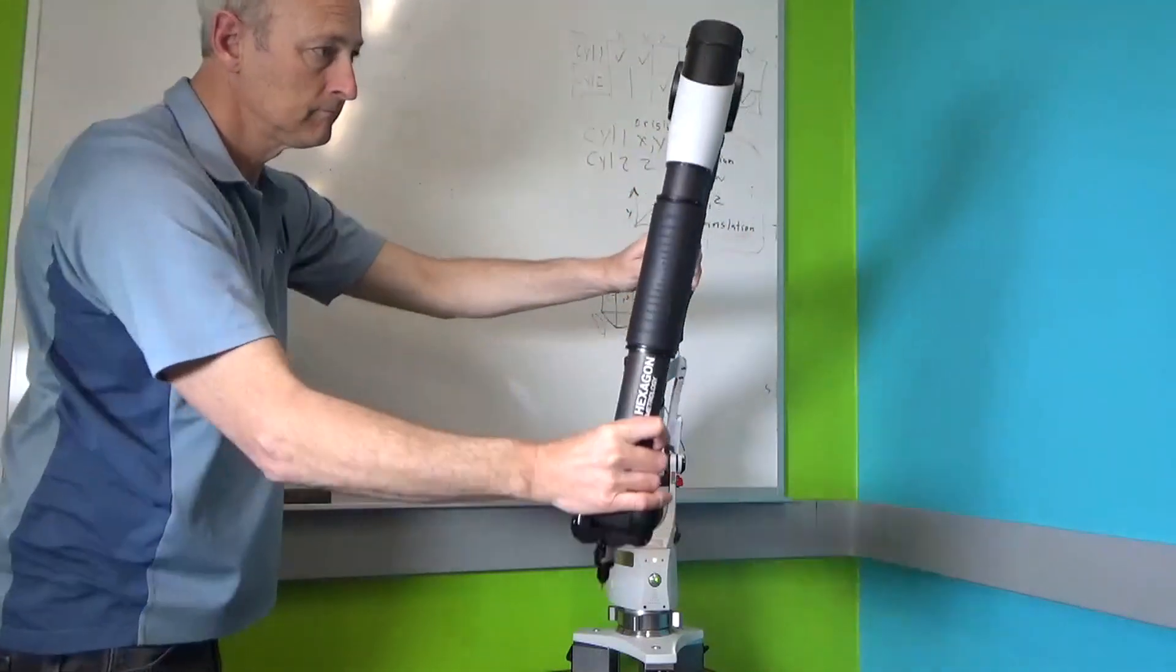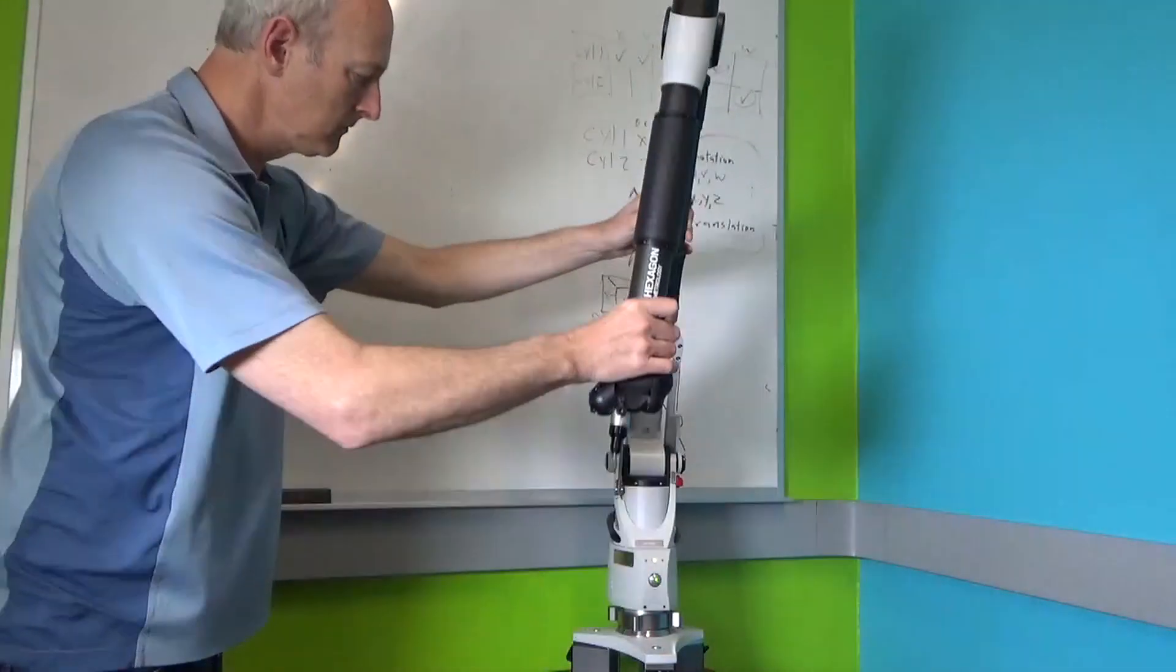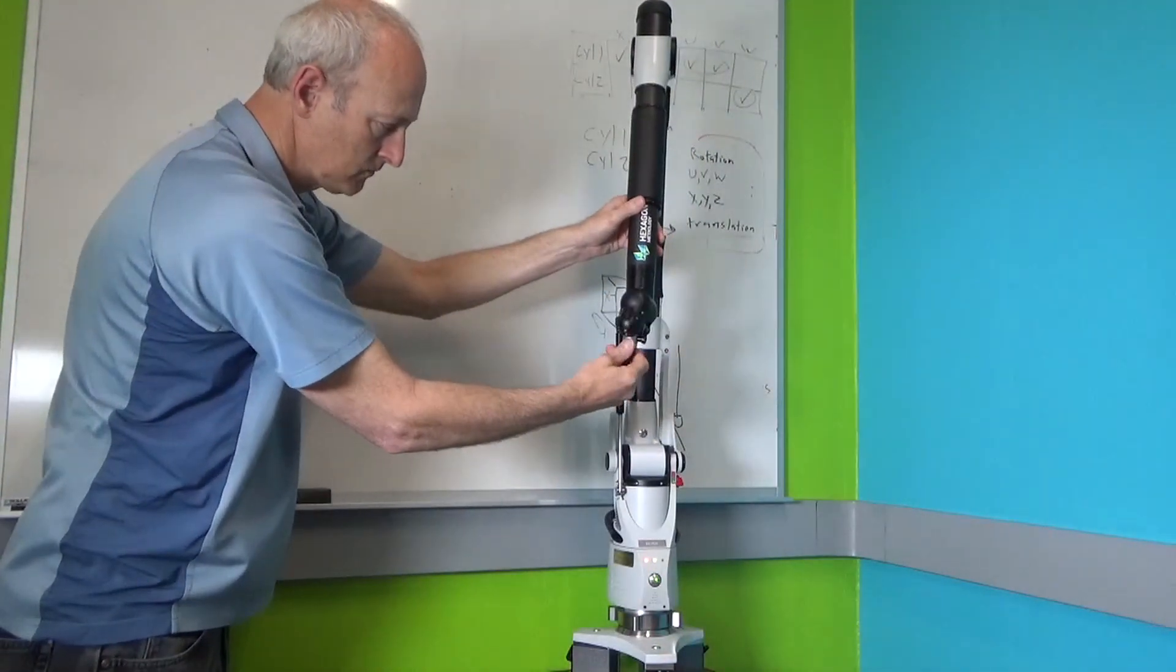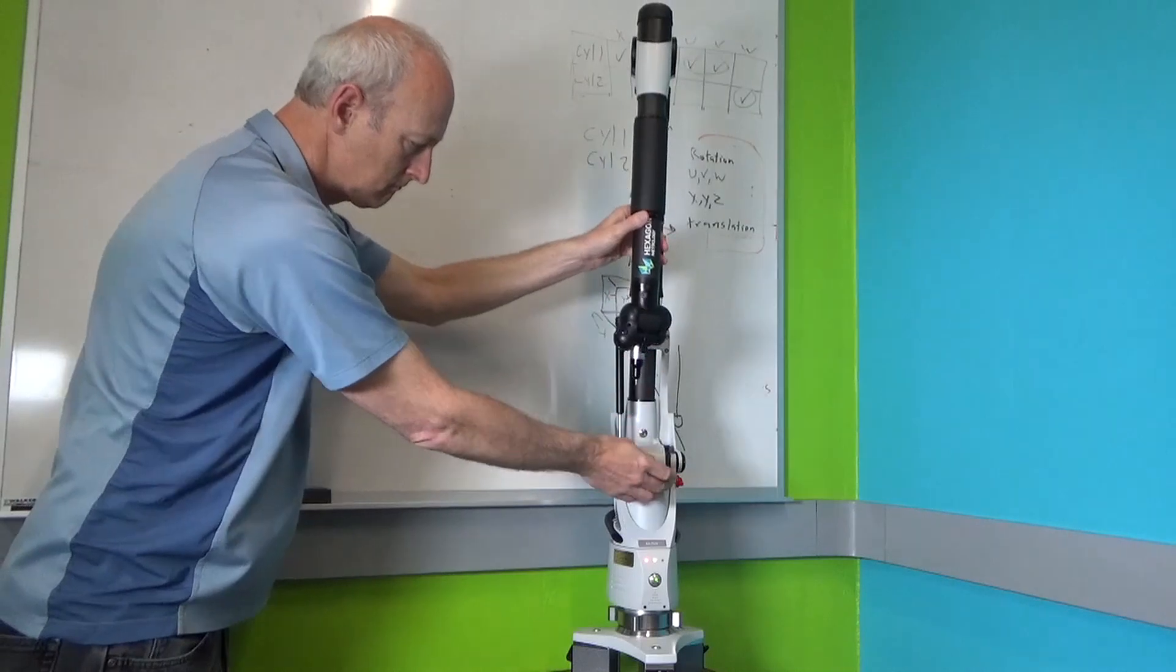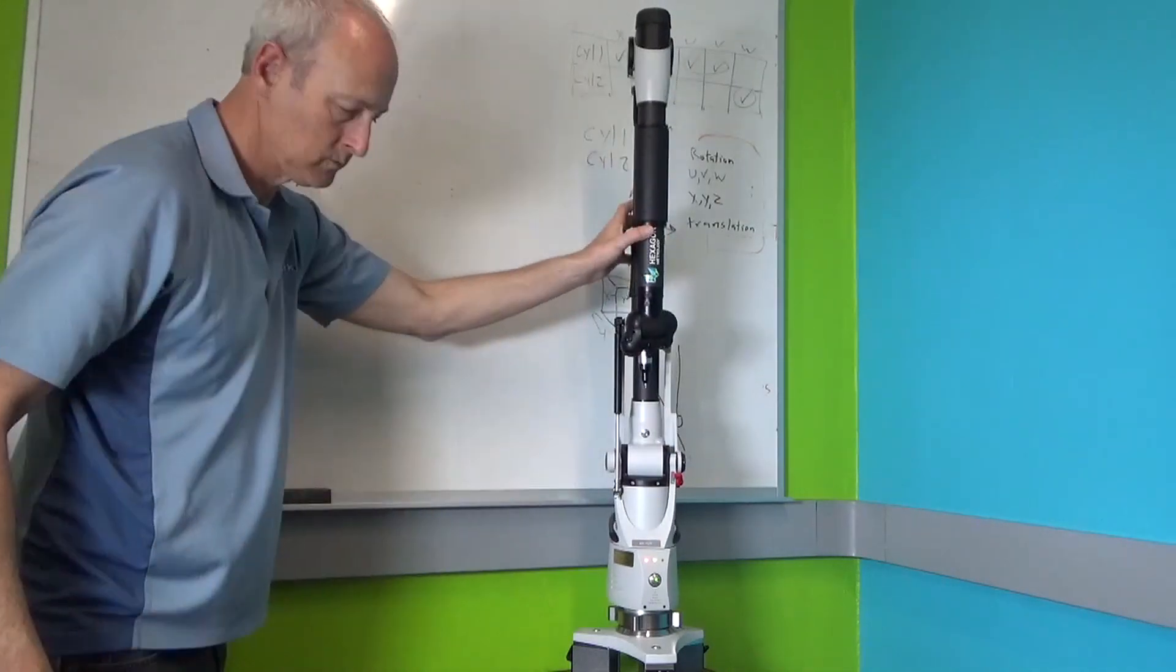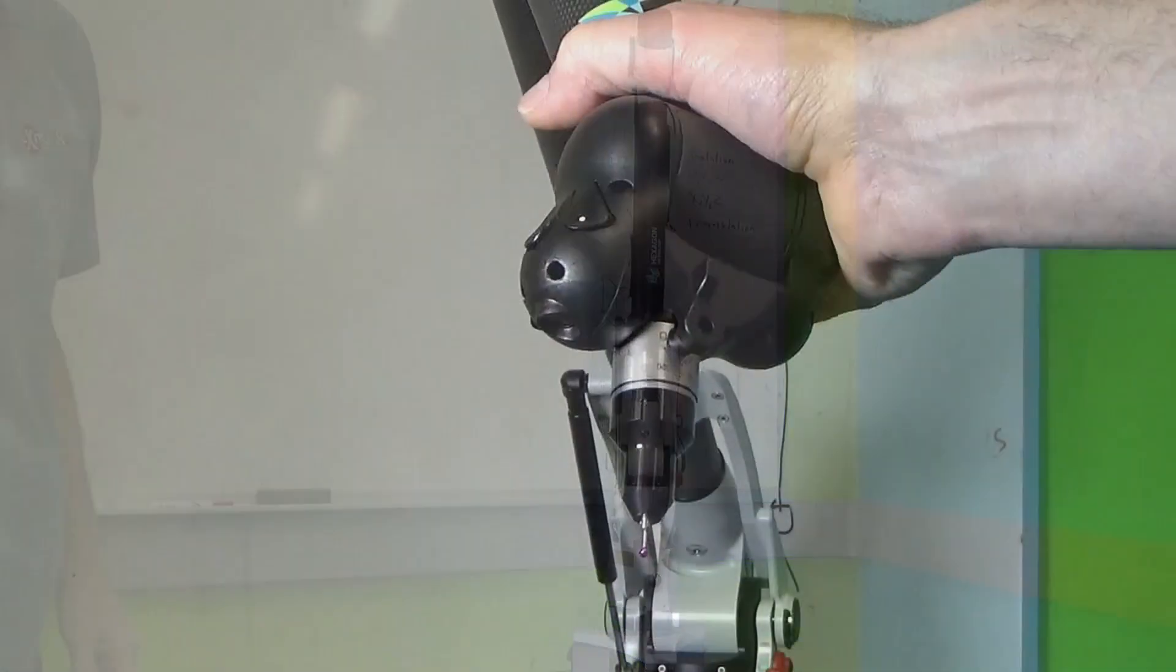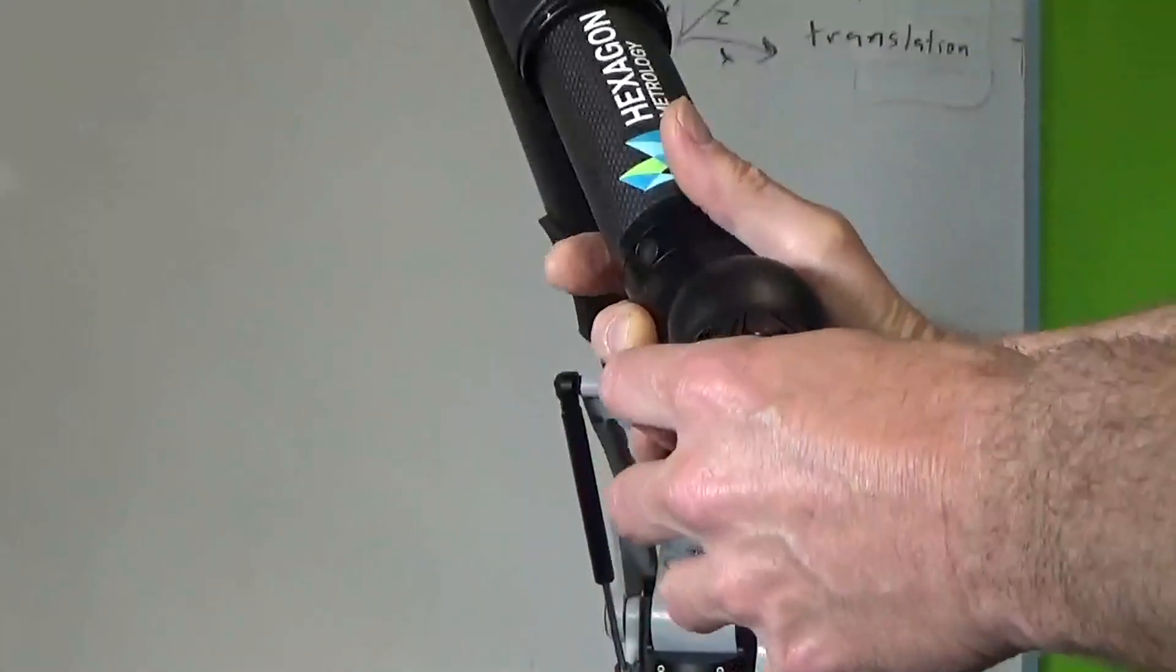It can rotate and move up and down and then also at the very end where the tip is you can rotate that and you can turn that. If you move it to any extreme either fully closed or fully open it will give you an error.